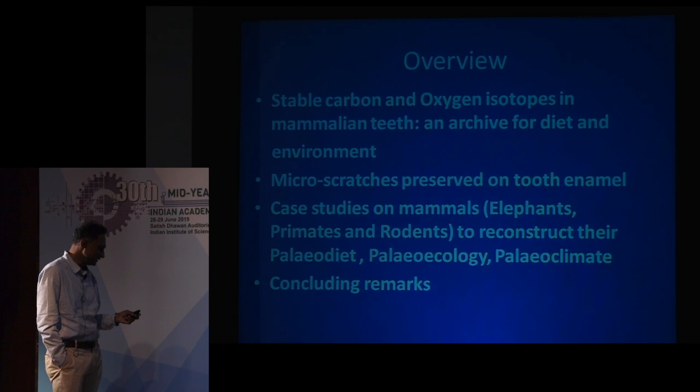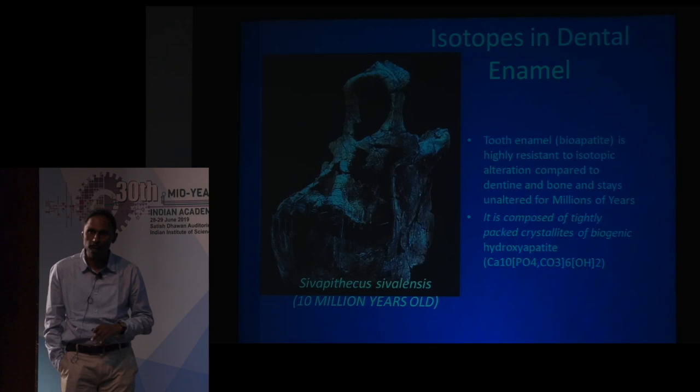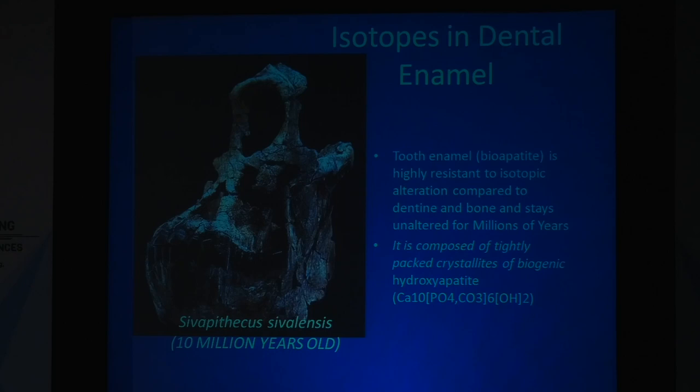To give you an idea of what I work on: this is a skull of an ape that lived some 10 million years ago in the Himalayan foothills. You can see the teeth here — they are still pretty shiny and pristine. They are made up of calcium phosphate, but there is carbonate and oxygen which come from the environment and from the food the animal ate.